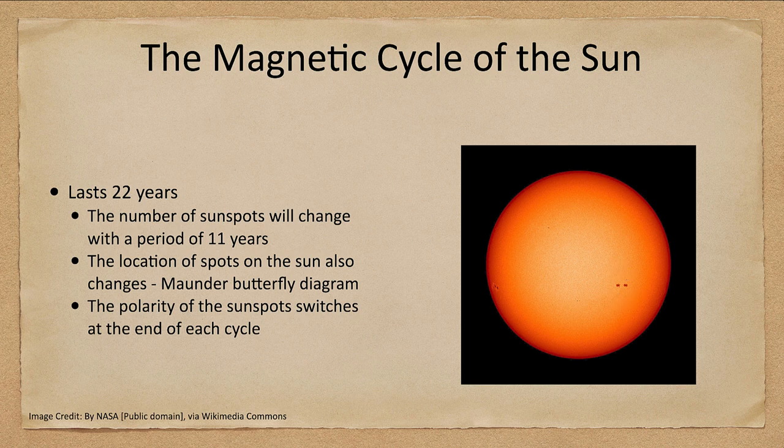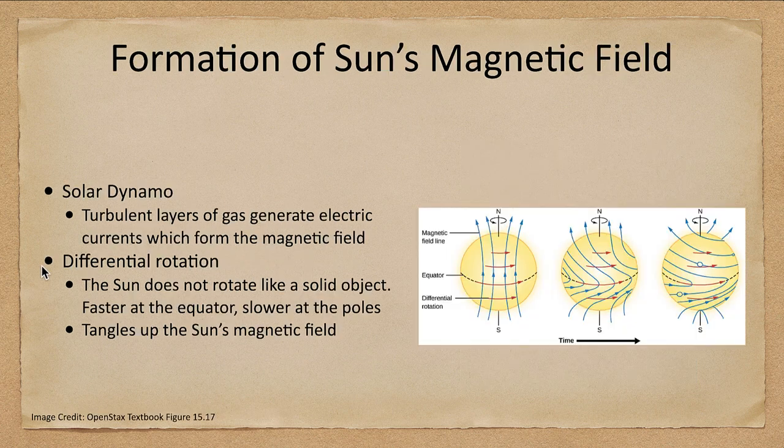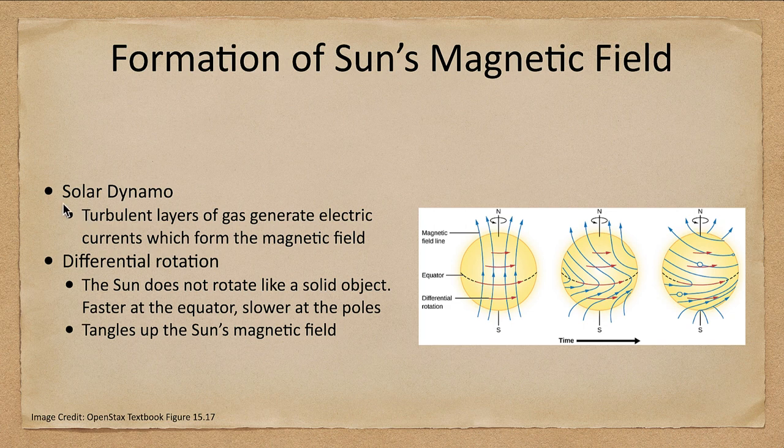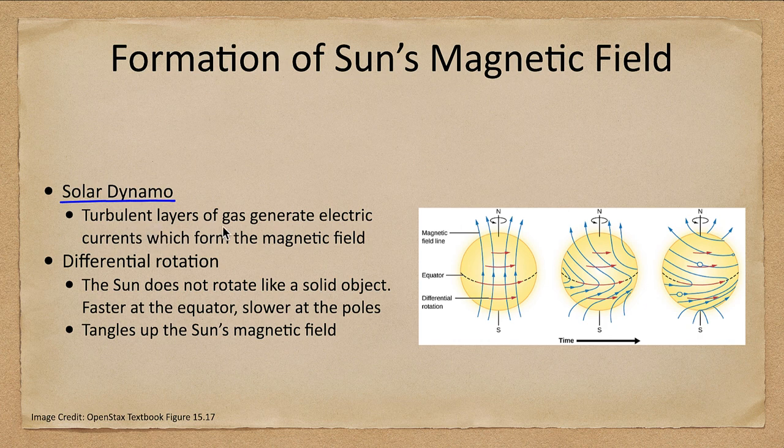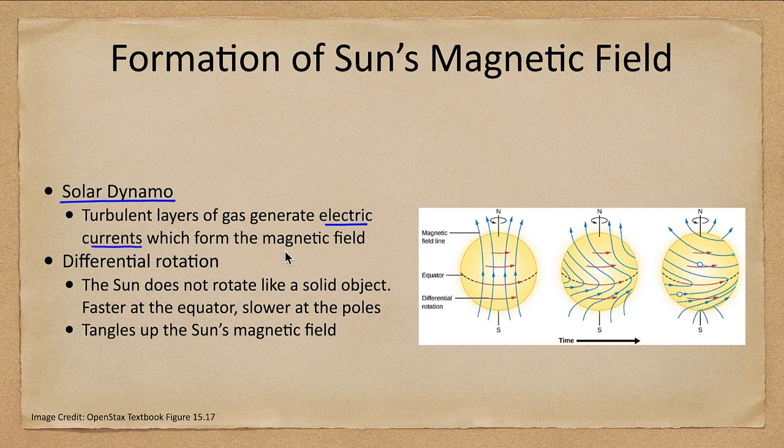How does the sun get this magnetic field? We talk about the solar dynamo. We had a dynamo on earth, but we can also have a dynamo on the sun. There are layers of gas that can generate electric currents which then form the magnetic field around the sun.